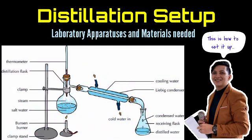Hello there again, class. And today, we will talk about the separation of solution. I will show you the setup for distillation and the different laboratory apparatuses you need for a simple distillation. You should have a thermometer, a distillation flask, a clamp, Bunsen burner, clamp stand, a Liebig condenser, and a receiving flask. You will also need salt water, clamps, and tubes.